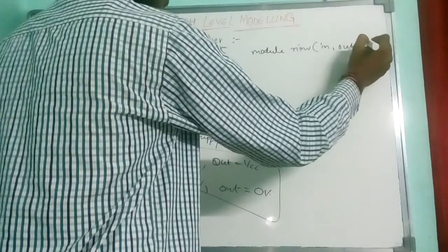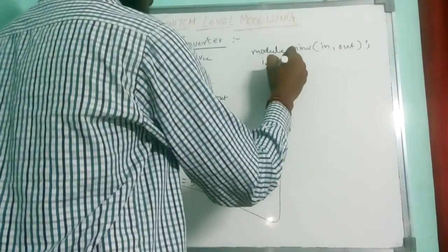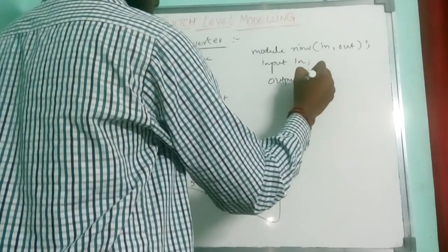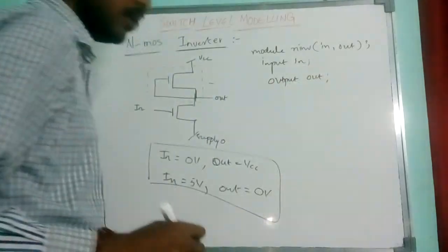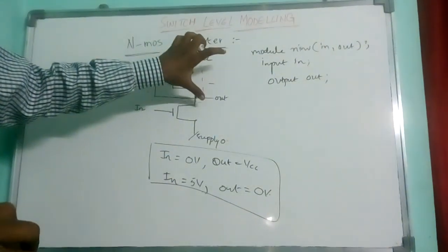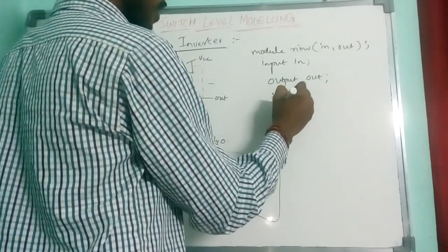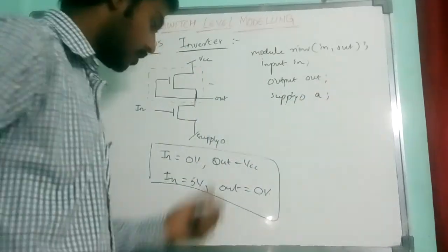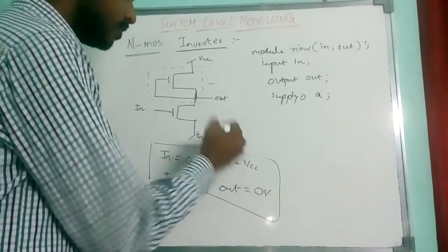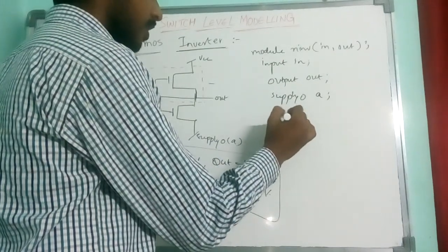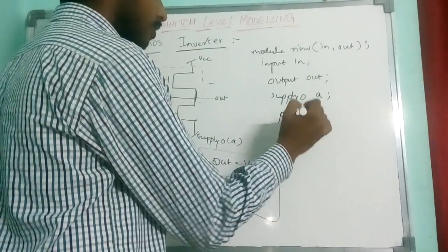Here we have only one input and one output. Input is IN, output is OUT. This supply load we don't consider directly, but we take supply 0 as A. I have given the name for supply 0 as A here.